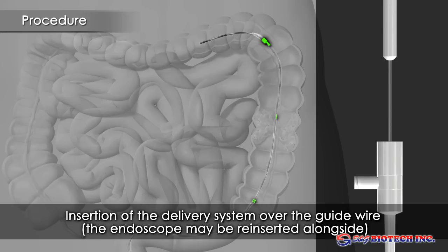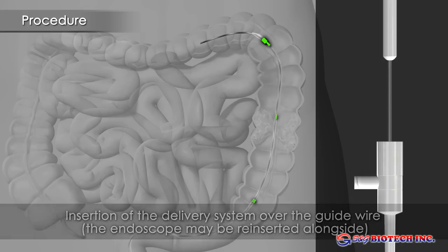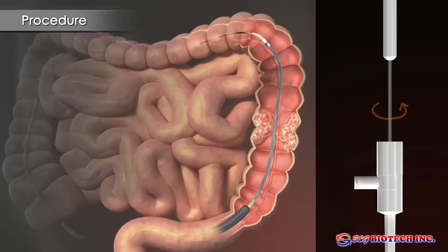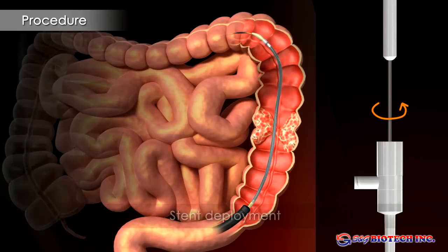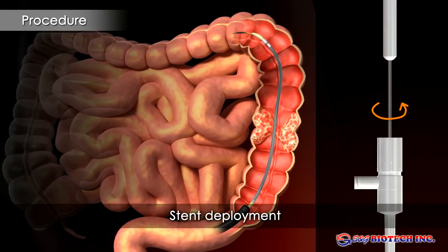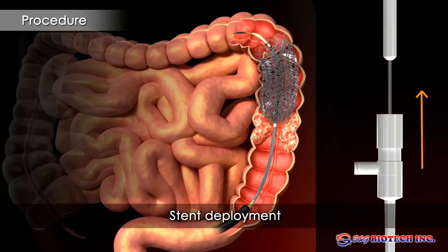Radio-opaque gold markers allow accurate stent positioning on fluoroscopy. A yellow marker on the delivery system allows deployment under endoscopic control. The stent should extend beyond the edges of the stricture by at least 1-2 cm.